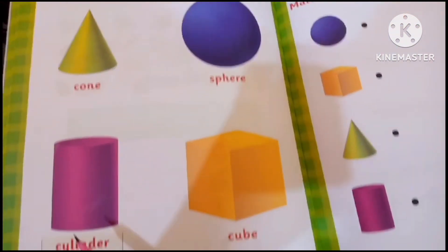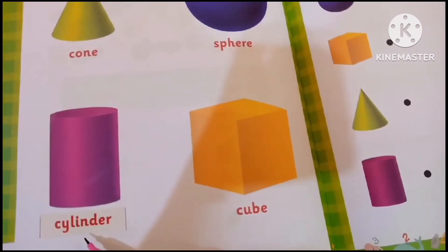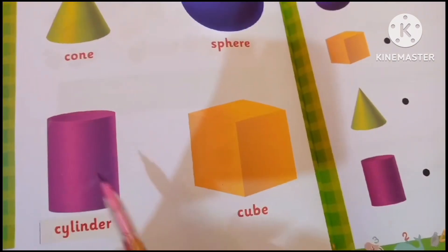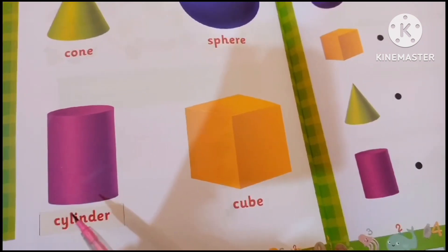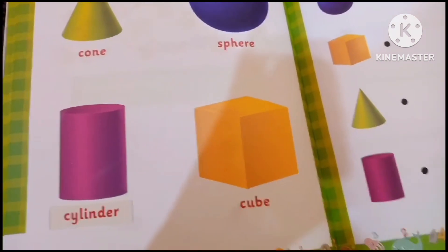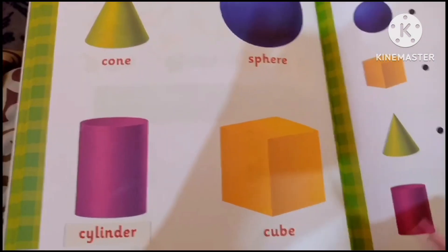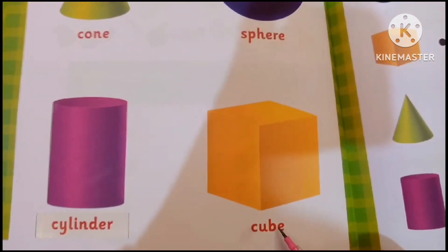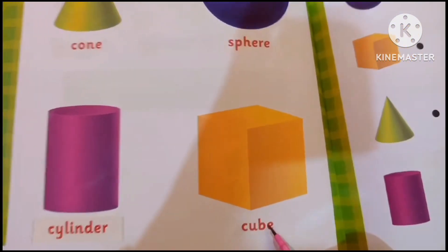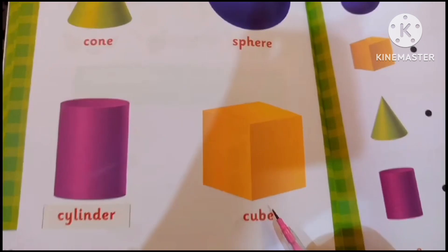sphere. Okay, this is a cylinder, a cylinder shape. And this is a cube shape - the example is a gift box.